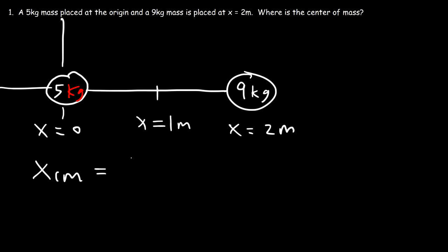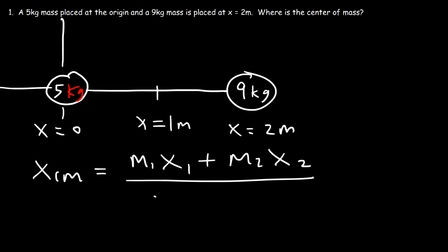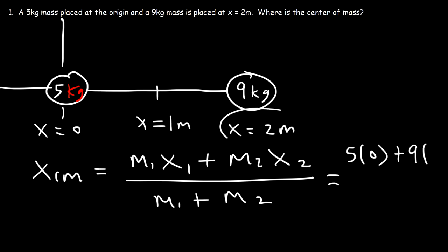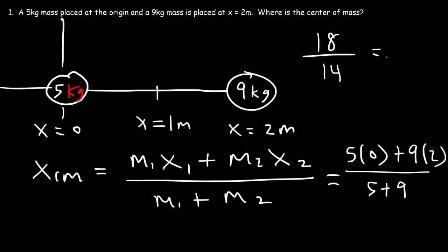To calculate it, you can use this equation: it's the mass times the position of each particle — the sum of those values divided by the total mass. In this example, m1 is 5 and its position is 0; the second mass is 9 and its position on the x-axis is 2. Dividing by the total mass: 5 times 0 is 0, 9 times 2 is 18, and 5 plus 9 is 14.